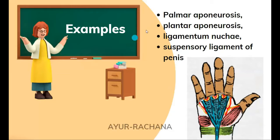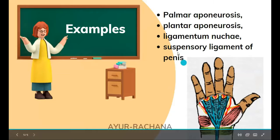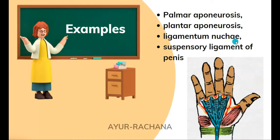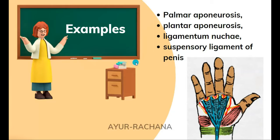As examples, we can quote the palmar aponeurosis of the hand, the plantar aponeurosis of the feet, the ligamentum nuchae present in the neck region, and the suspensory ligament of the penis in the penile region. These are examples that can be quoted for kurcha. This concludes today's session on kurcha under the Paribhasha Sharira. Thank you.